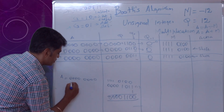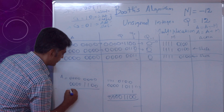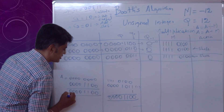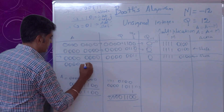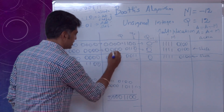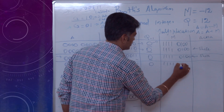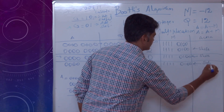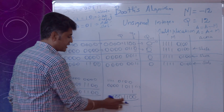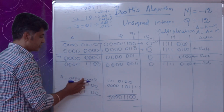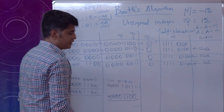So -M = 0 0 0 0 1 1 0 0. Adding A (0 0 0 0 0 0 0 0) plus (-M): the result A = A - M = 0 0 0 0 1 1 0 0. Now writing the updated values: A = 0 0 0 0 1 1 0 0, Q = 0 0 0 0 0 0 1 1, Q(-1) = 0, M = 1 1 1 1 0 1 0 0. The subtraction part of step 3 is completed using two's complement representation.